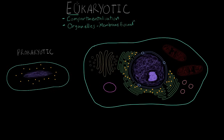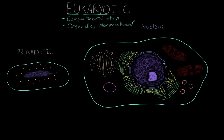The word 'eu' means 'well' in Greek, and 'karyote' means kernel or nut. So when scientists originally looked at eukaryotic cells, they saw a very well-formed circular object in the center that looked kind of like a nut, and so they called these cells eukaryotes because they had a well-formed nut in the center of the cell. This nut is what we now know as the nucleus — a circular membrane-bound organelle that contains all of the genetic material in the cell. So all of your chromosomes are inside the nucleus, separated from the outside of the cell. The nucleus is the defining organelle of eukaryotic cells.